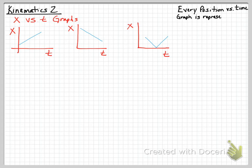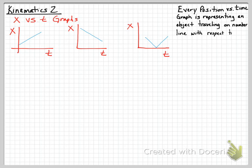Every position versus time graph represents an object traveling down a number line. We did this in class today where your teacher walked in the hallway — you timed your teacher walking slow, fast, or brisk — and you got to see what would happen with respect to time down a number line. So let's talk about this first graph's number line.